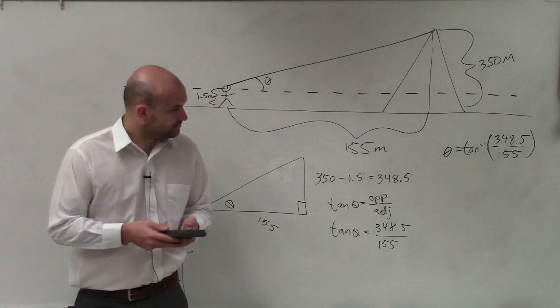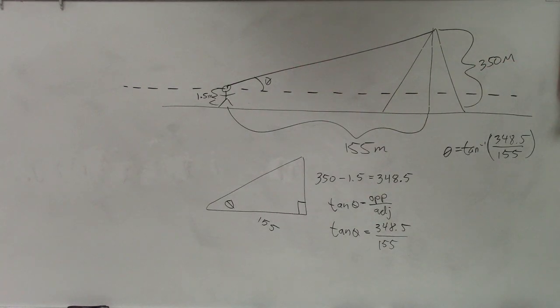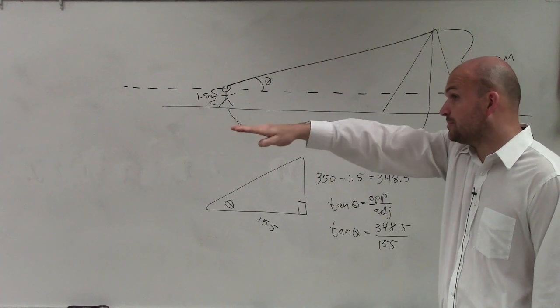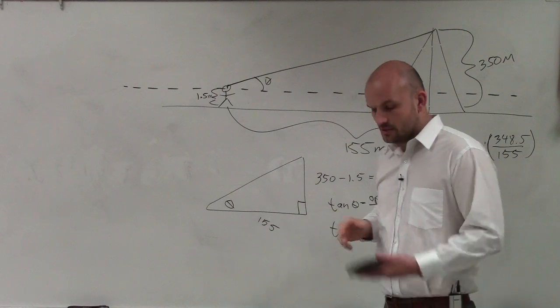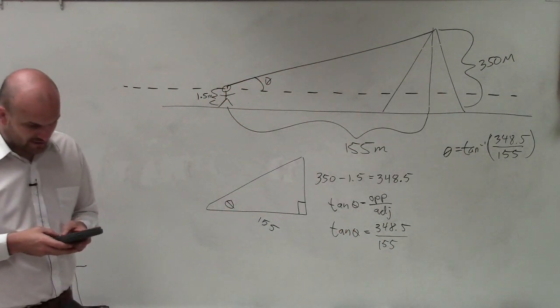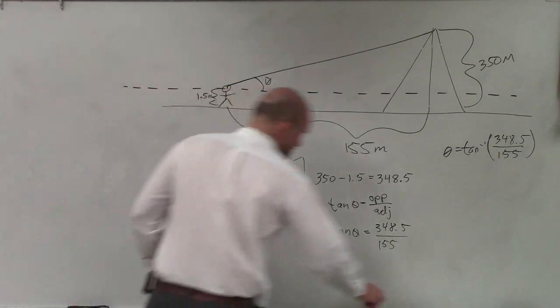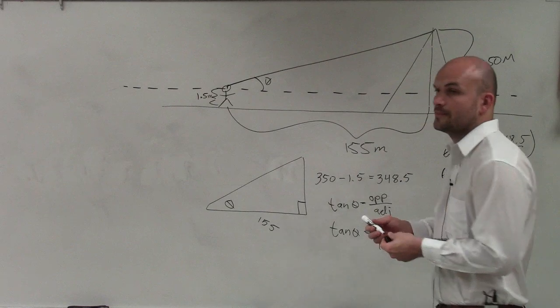I already created the picture. I already created the triangle. Now, I just want to let the calculator do the work. So then I just do 348.5 divided by 155 and I get 66.02. So therefore, theta equals 66.02 degrees. And that is my final answer.